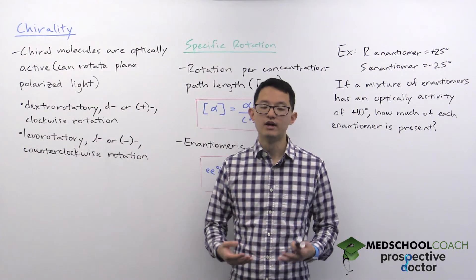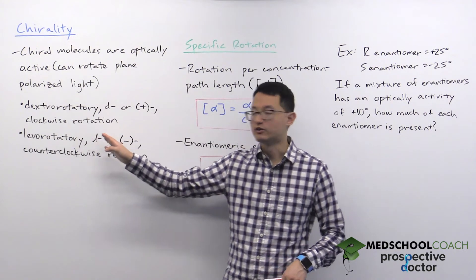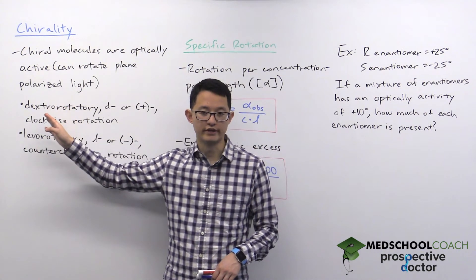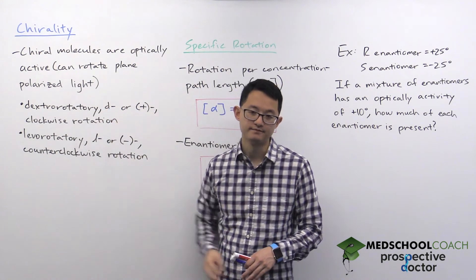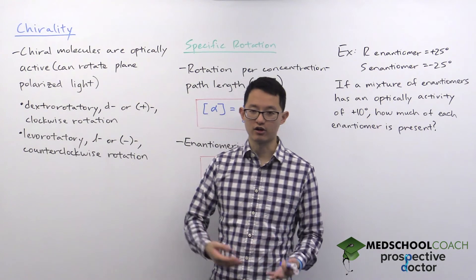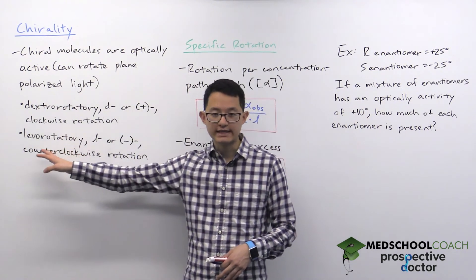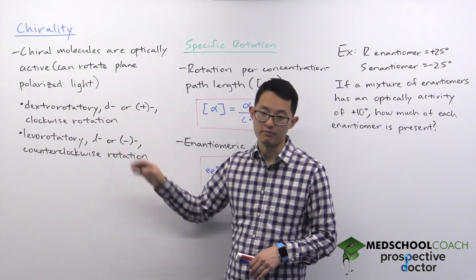If your sample rotates the light clockwise, then we say that the molecule is dextrorotatory, which is often denoted with a lowercase d or a plus sign. If your molecule instead rotates the light counterclockwise, then your molecule is levorotatory, denoted by lowercase l or a minus sign.